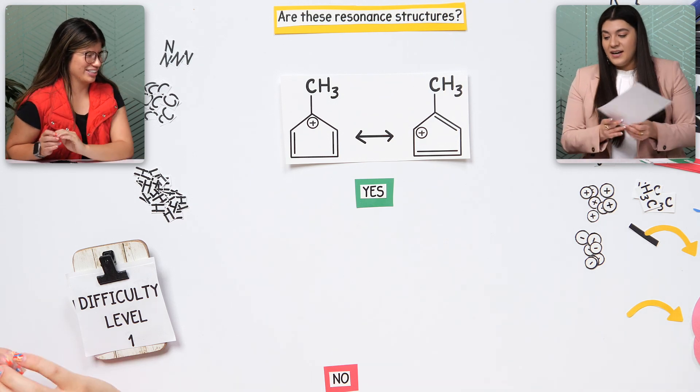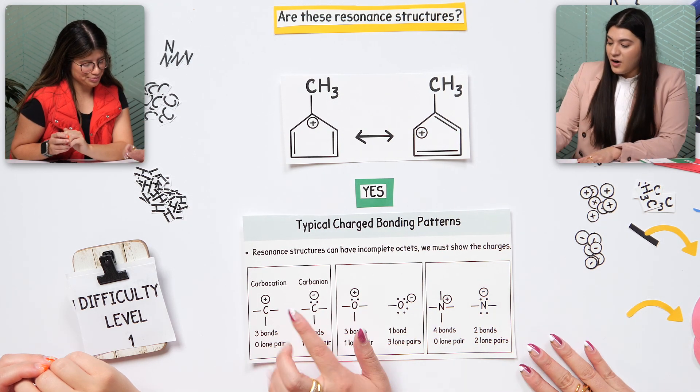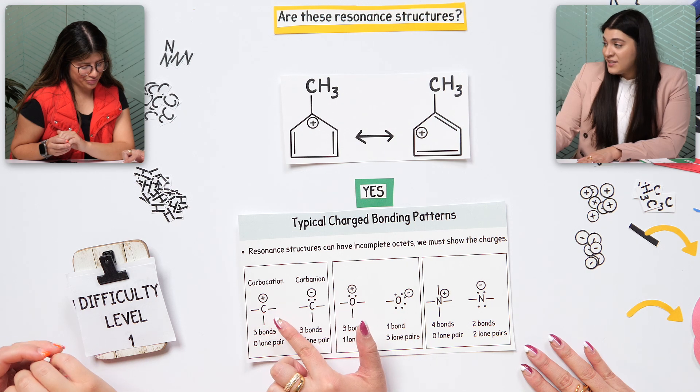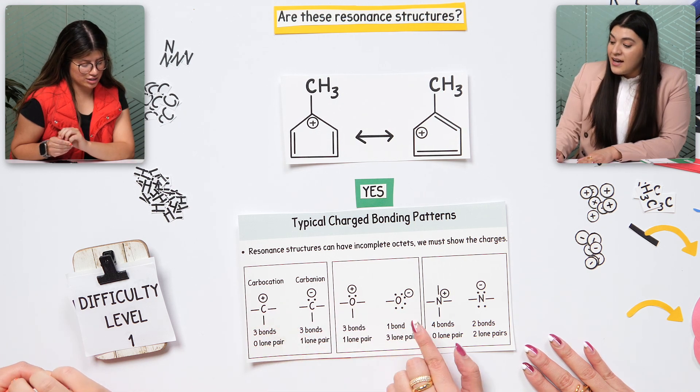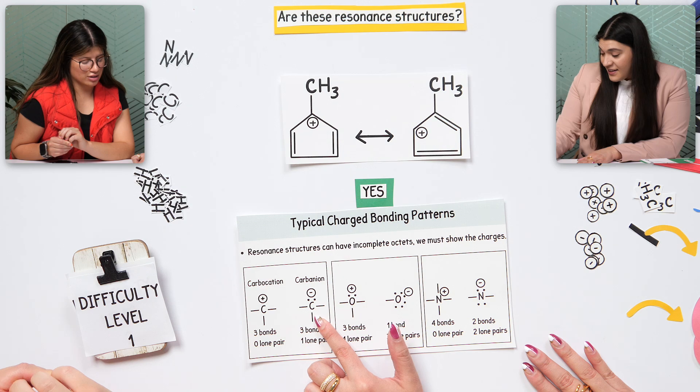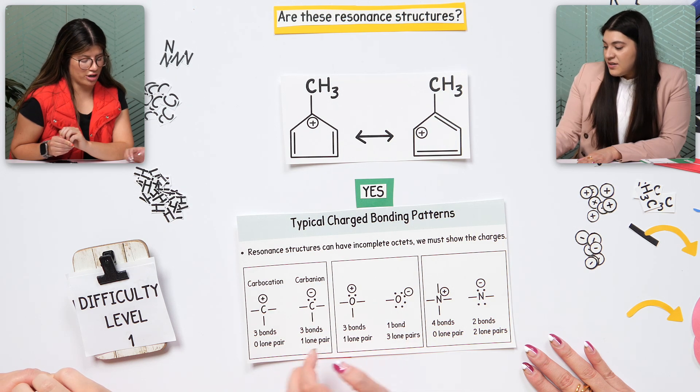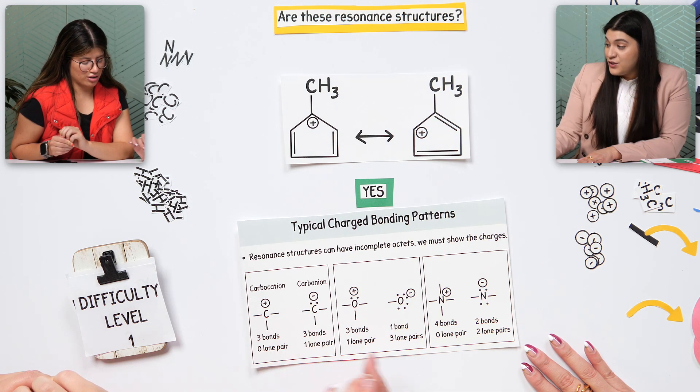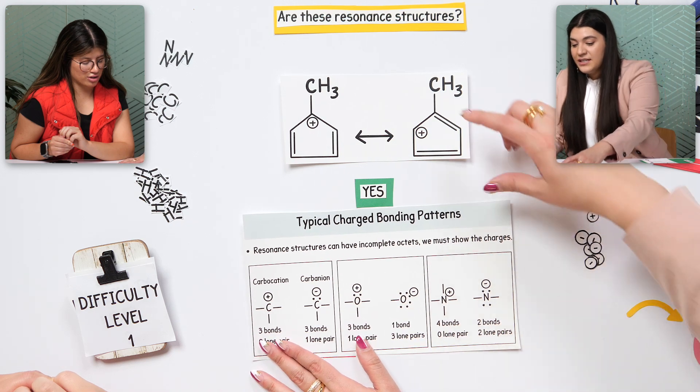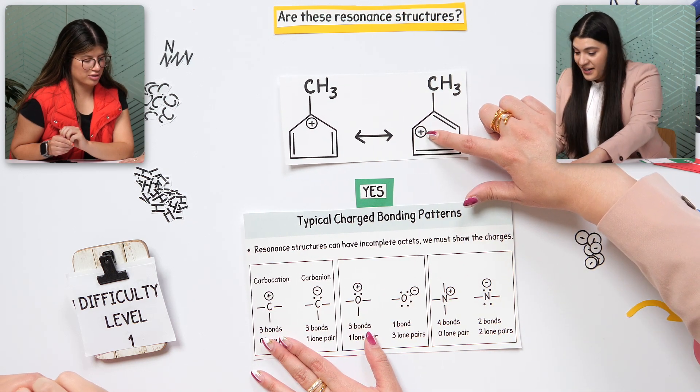We can also look at it as something like this, where we're going to see a carbocation. This is going to be something that's commonly said all throughout organic chemistry. And then a carbanion just means negative charge. Right, right.